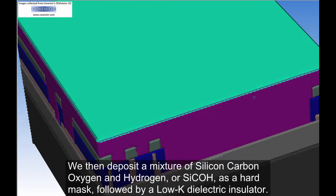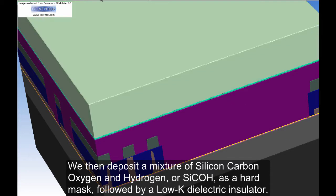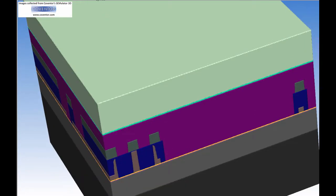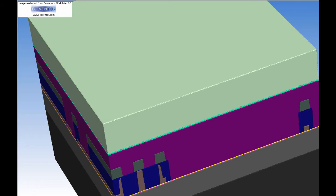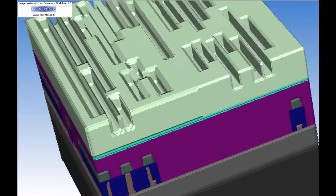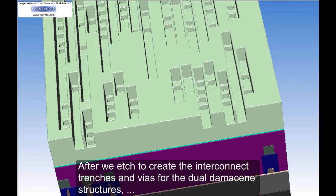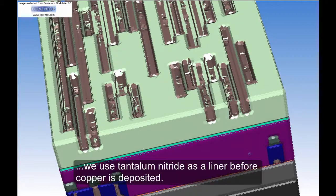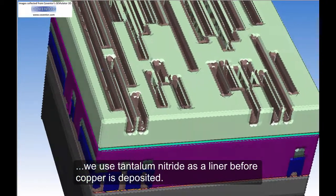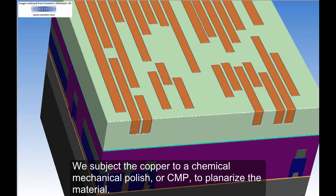We then deposit a mixture of silicon, carbon, oxygen, and hydrogen, or PSYCO, as a hard mask, followed by a low-K dielectric insulator. After we etch to create the interconnect trenches and vias for the dual damascene structures, we use tantalum nitride as a liner before copper is deposited. We subject the copper to a chemical mechanical polish, or CMP, to planarize the material.